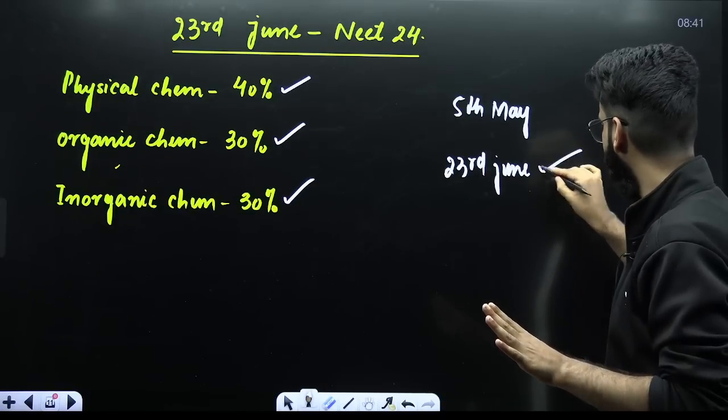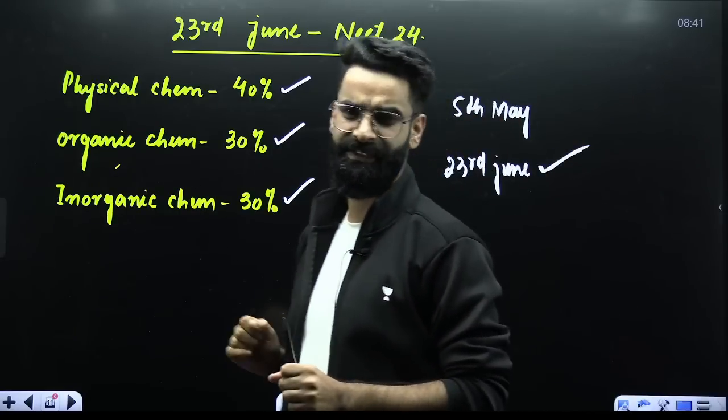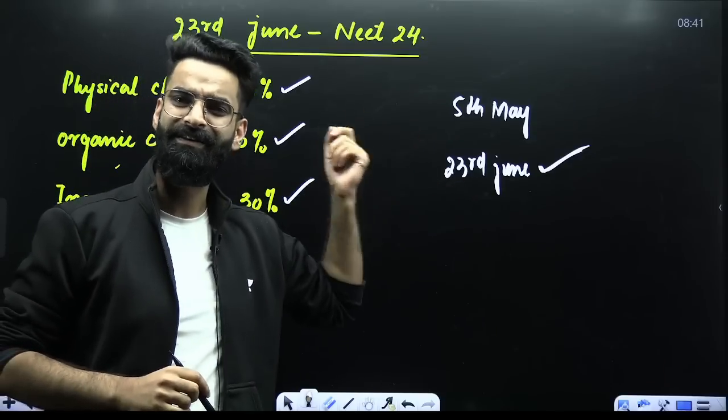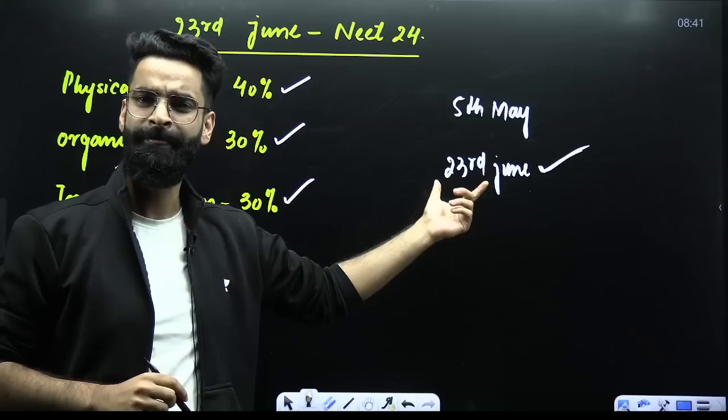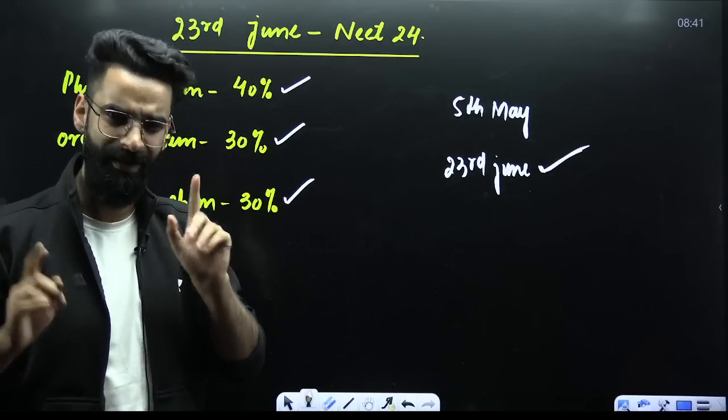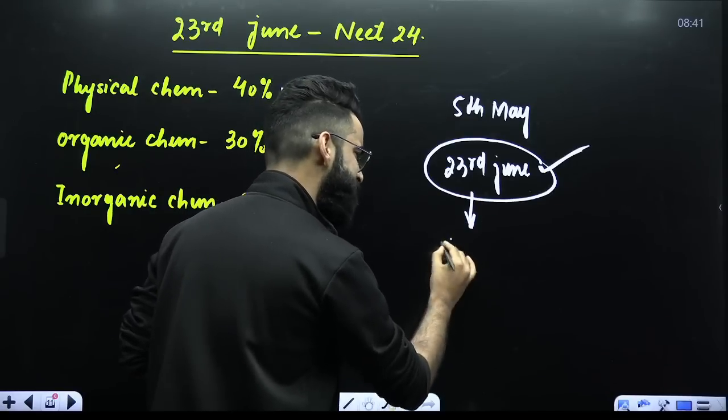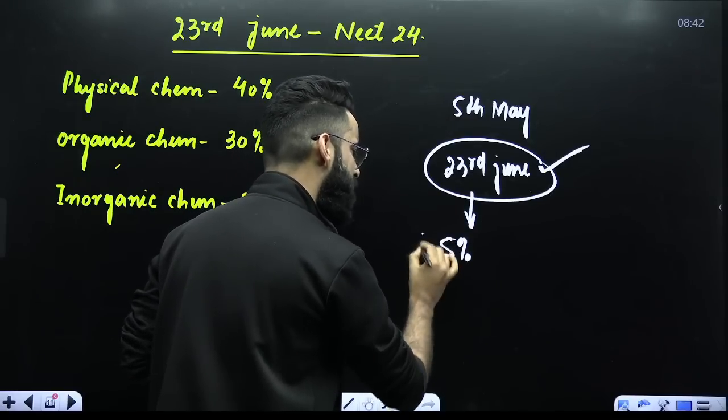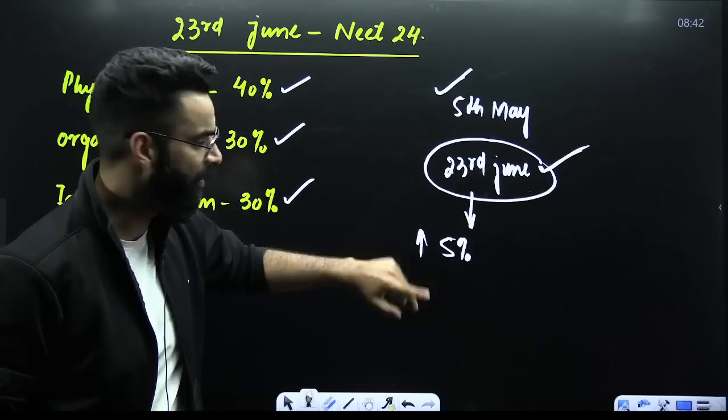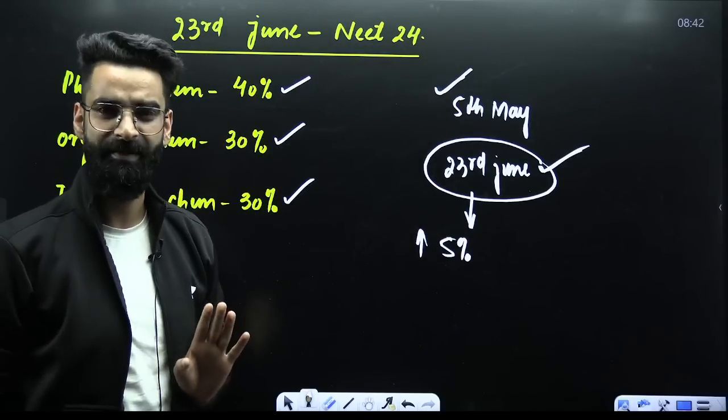But if I talk about the chemistry section, in chemistry section the calculations were there basically. More questions were there in physical chemistry. Therefore, students would have taken time to solve those questions for sure. But if you ask me the level, the level was almost the same. I would say this particular examination, its level was almost the same means it was 5%, I would say, more than that of this particular examination. The level of yesterday's examination was almost 5% more than that of the 5th of May examination.